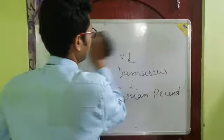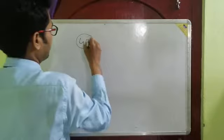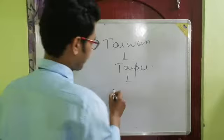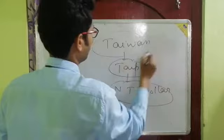Next comes Taiwan. As I told you last class, Taiwan is a disputed region between China and Taiwan, because China is claiming that Taiwan is their own territory. The capital of Taiwan is Taipei and the currency they use is the New Taiwanese Dollar.